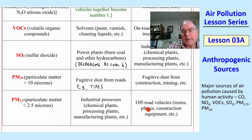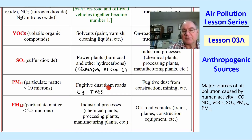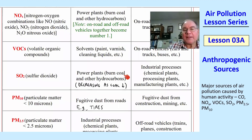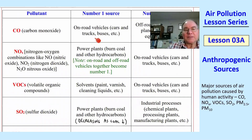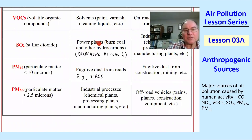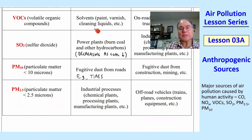Looking across all these pollutants, we can find vehicles — either on-road or off-road — in nearly every category. The only one that doesn't have vehicles as a top source is SO2. These are just a few pollutants, but they're all man-made, or human-made — anthropogenic sources of air pollution. No quiz for this one; I just wanted you to know where some of this air pollution is coming from.